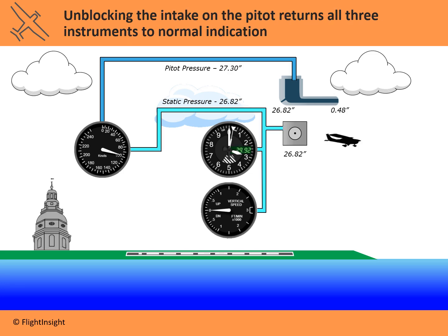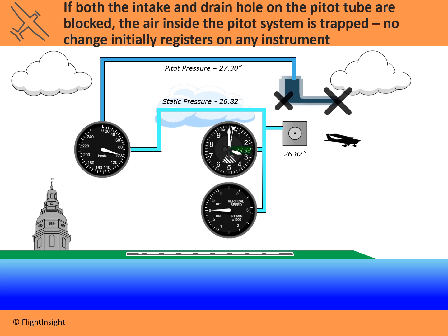Now let's unfail the instruments again and go back to the beginning: 3,000 feet, unaccelerated straight and level flight at 100 knots, everything reading correctly. Blocking just the front causes the airspeed to go straight to zero. But what if we block the whole thing — not just a little ice but the entire pitot tube, both the intake and that outflow drain? Blocking both traps the air in the pitot system. That 27.3 inches of air pressure isn't going anywhere because now we've trapped the system — it's a closed system. So initially, just like when we blocked the static system, there won't be any change on any of the instruments.